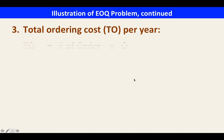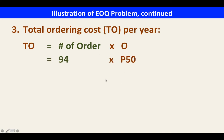The total ordering cost per year is calculated as: number of orders × ordering cost = 94 × 50 = 4,700.